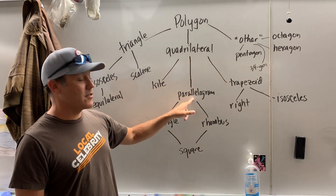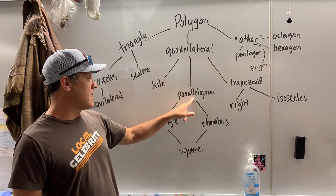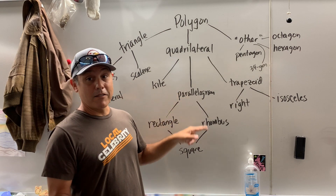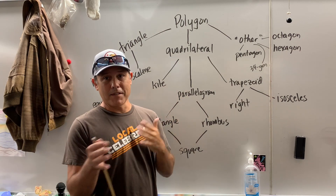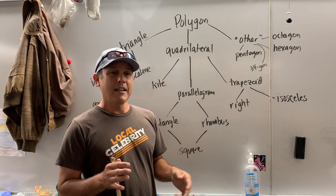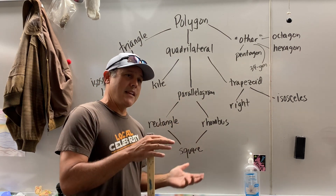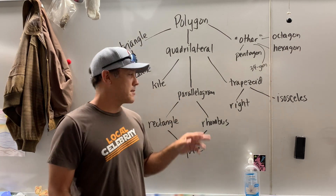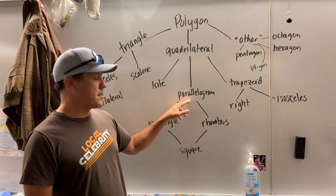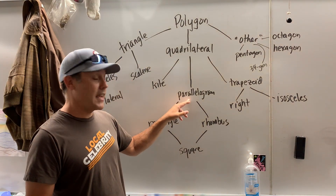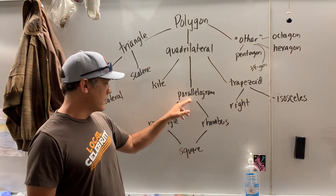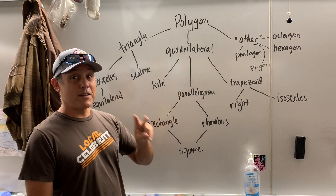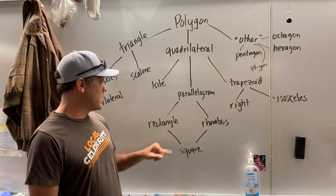A parallelogram was its other son, and it's called a parallelogram because opposite sides are parallel. There's a bunch of characteristics, but for now: opposite sides parallel, and they're also congruent.